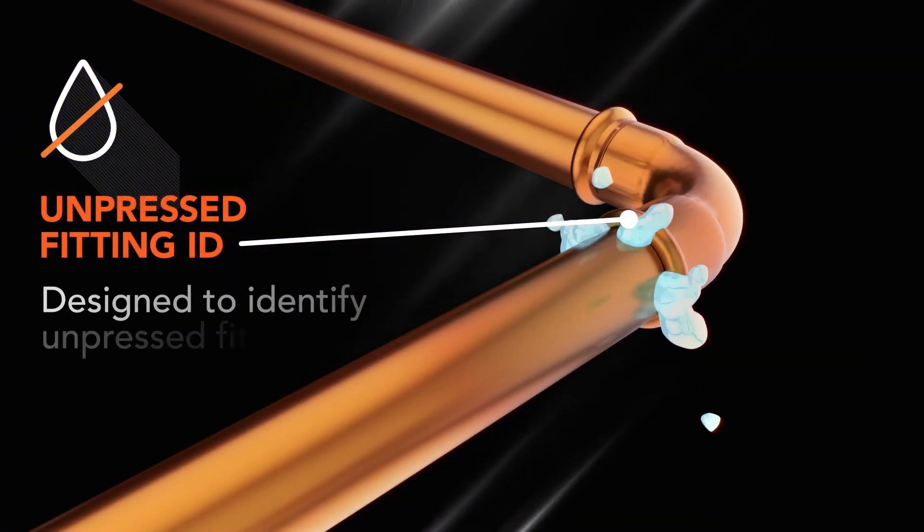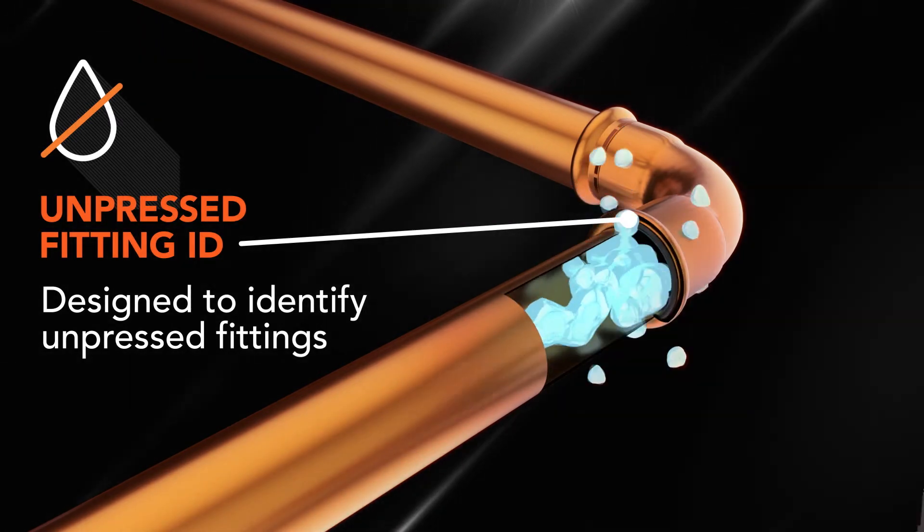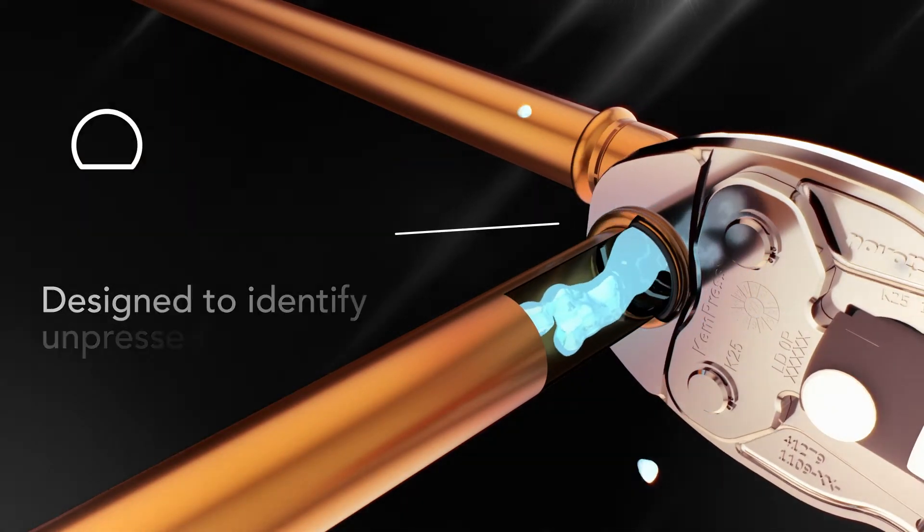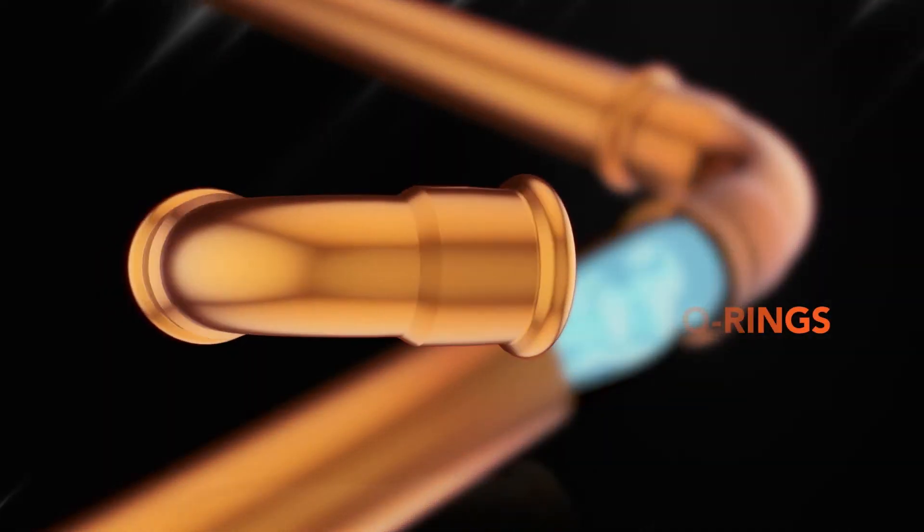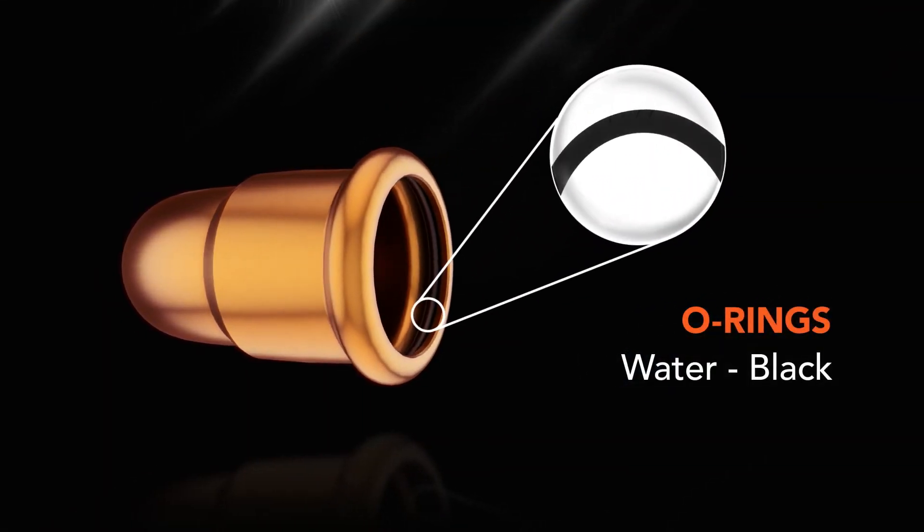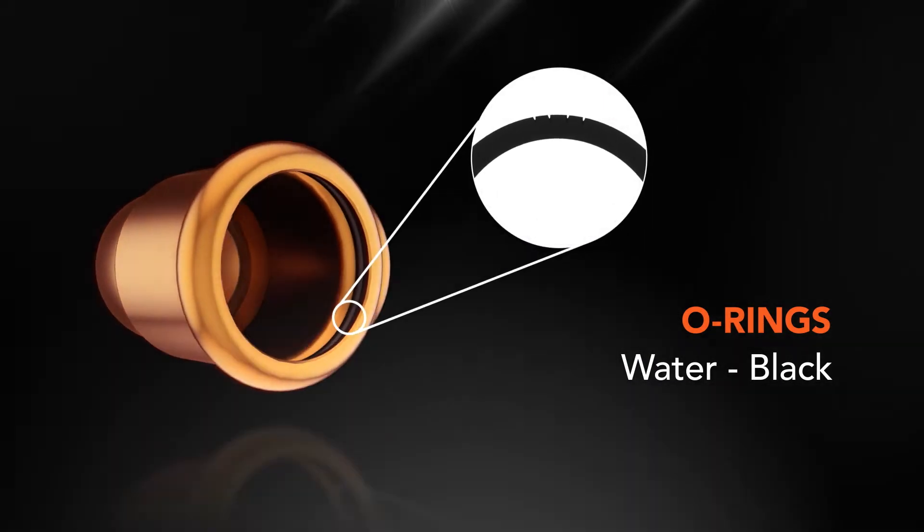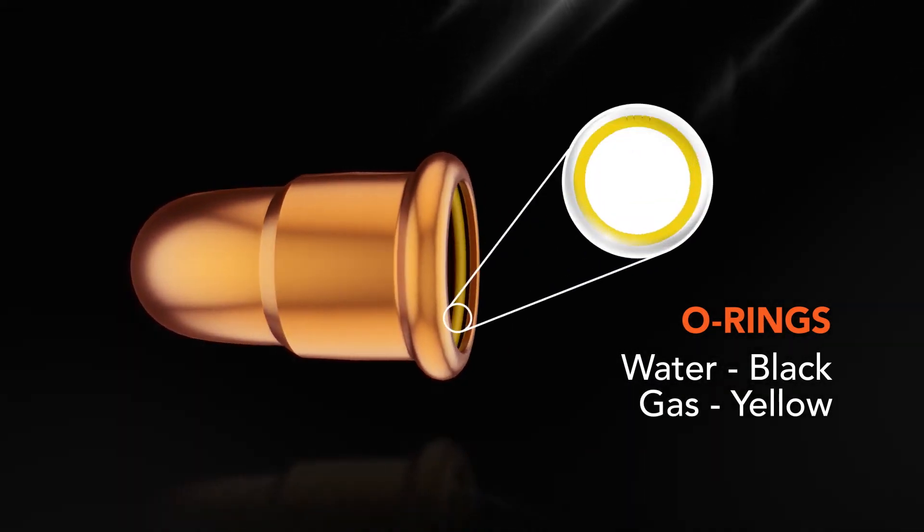The new unpressed fitting ID feature allows for water or air to escape from any unpressed fitting via a low pressure test, utilizing a combination of o-ring design and fitting tolerances to help you identify an unpressed fitting prior to commissioning.